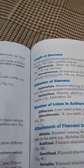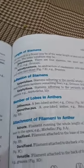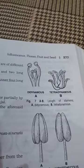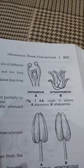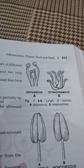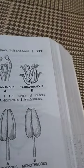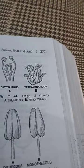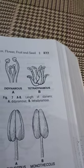If you look at the length of the stamens, two conditions exist: didynamous and tetradynamous. In didynamous, two stamens are longer and two are smaller. In tetradynamous, four stamens are longer and two are shorter.